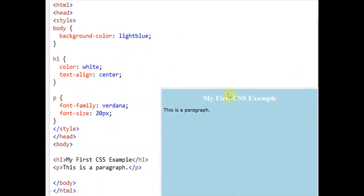The heading color is white — you can see here the color is white — and text-align is center, so the heading is centered on the page. Then we have the paragraph: P for paragraph, H for heading, and body for the body part. For the paragraph, the font family is Verdana. We can change it to Arial, Arial Narrow, Arial Black, or any font family. And the font size is set to 20px, so it will display accordingly.